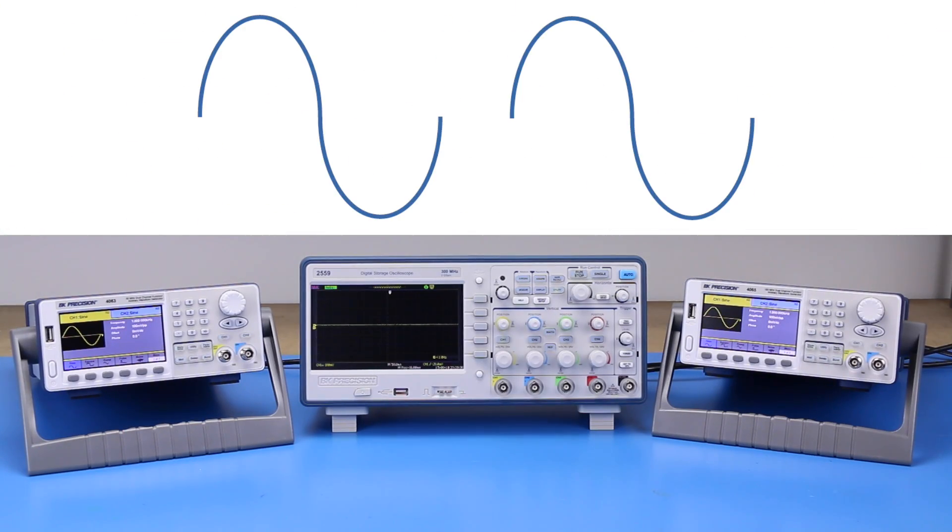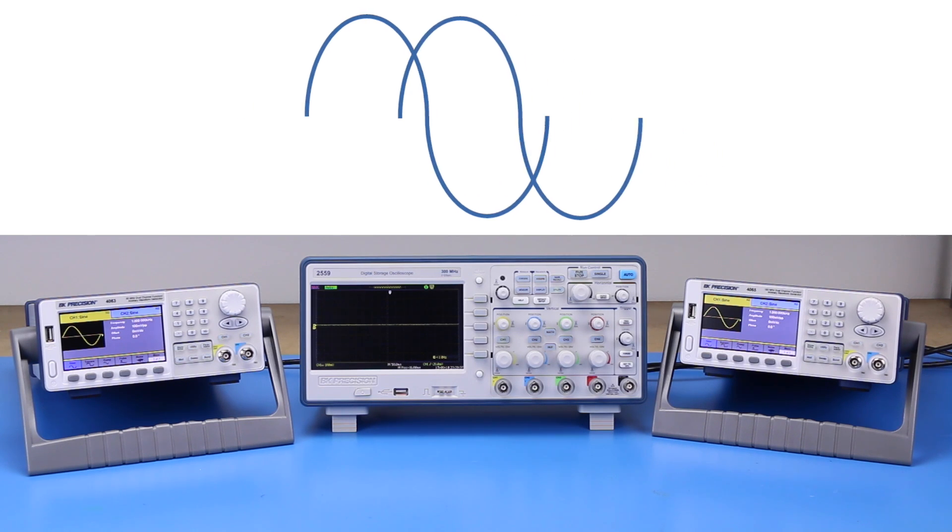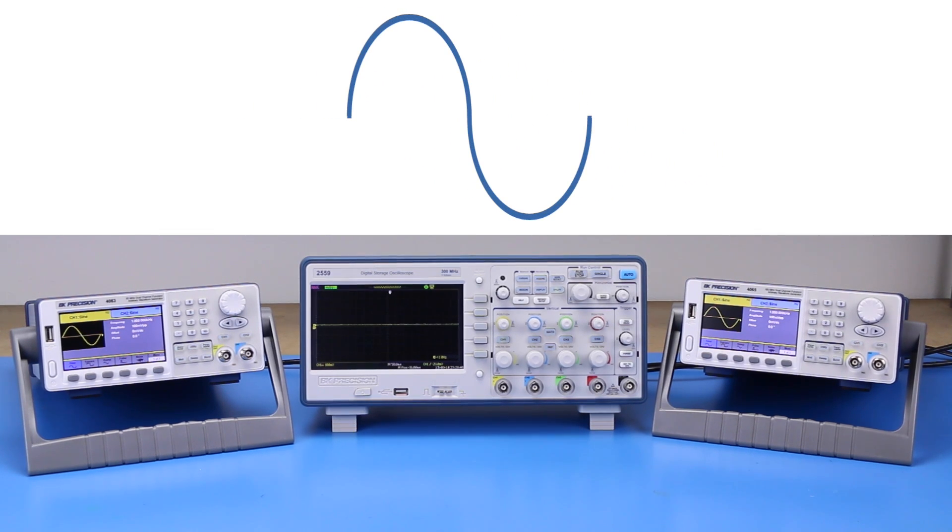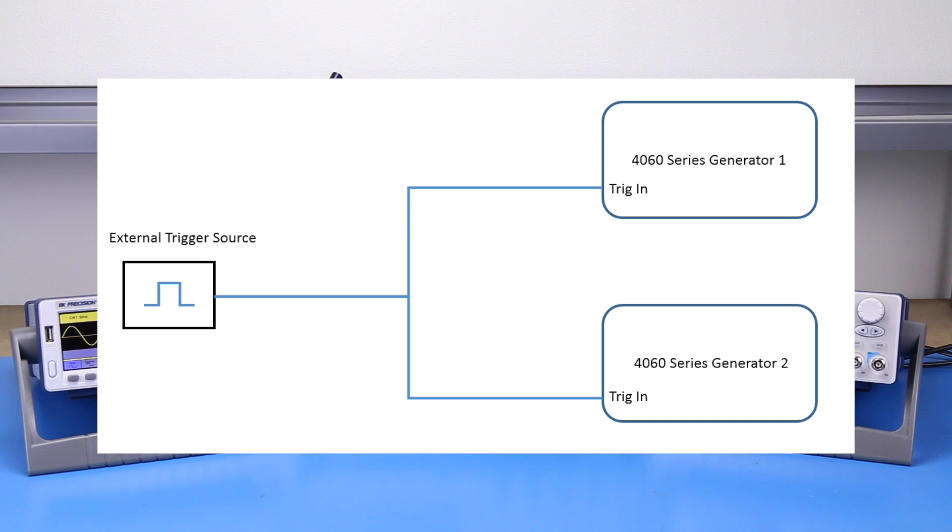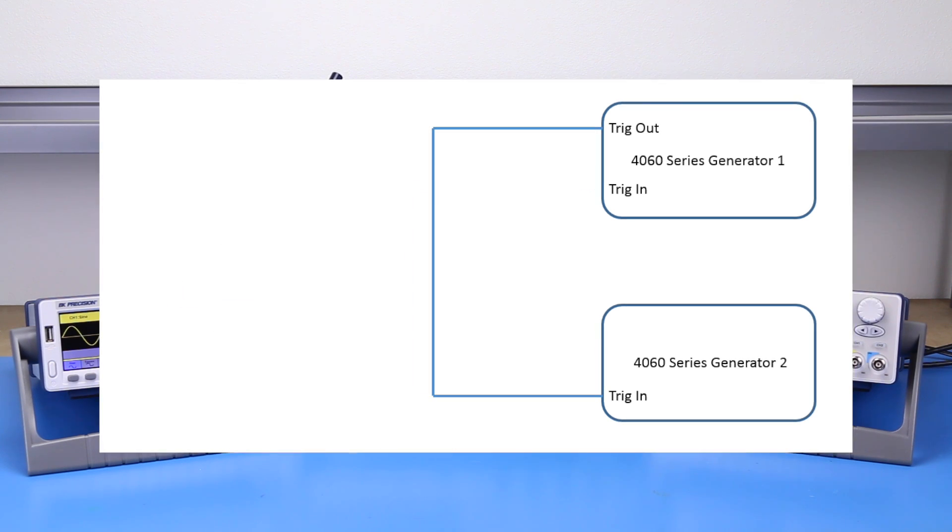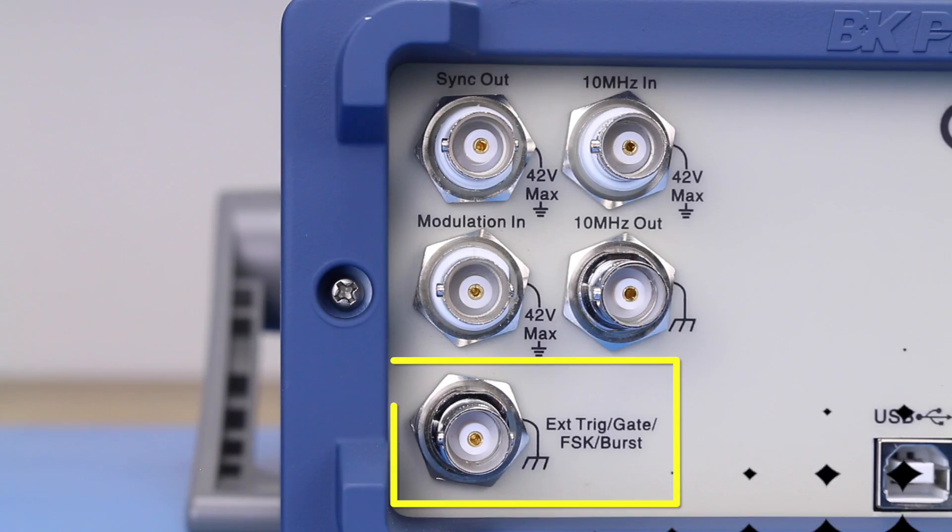The signals can then be aligned by using the burst function and each unit's external trigger BNC connector. The trigger could be from an external source or generated from one of the generators. For this example, we will use unit 1 to generate the external trigger.